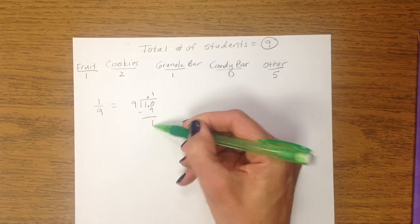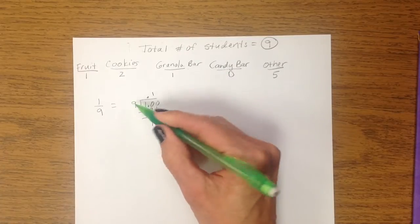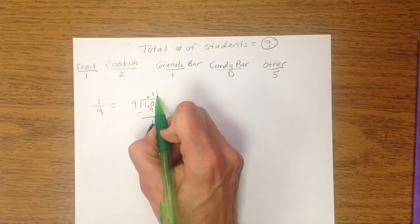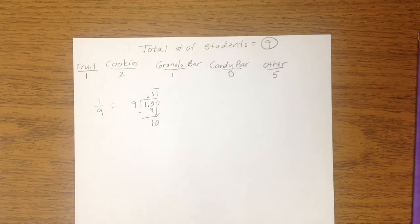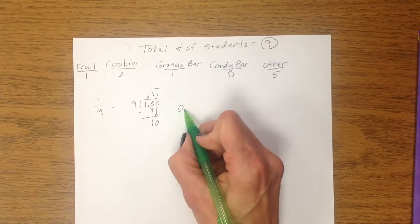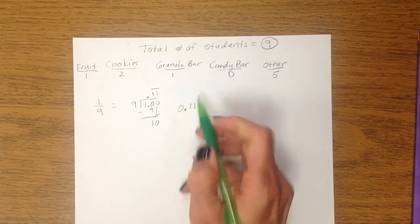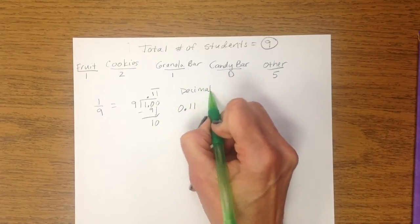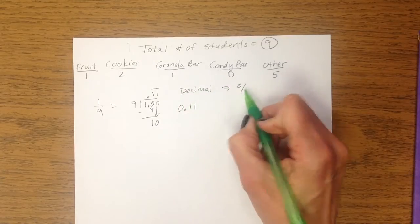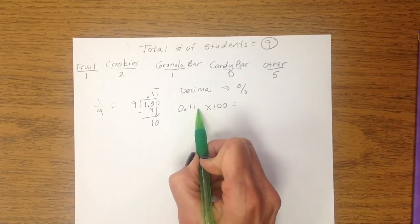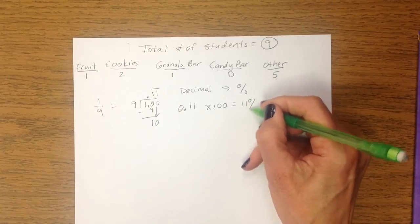And what you notice right away, because I get a one, is that I'm going to have a repeating decimal. It's going to just keep being nine into ten over and over again. And the only reason that I took it out to two digits is that we are going to convert that to the nearest whole percent. So, we were talking today and just refreshing our memory of what to do to change a decimal to a percent. And the way that we do that is multiply by 100. And, of course, the shortcut is move the decimal two places to the right. And so that would be about 11%.